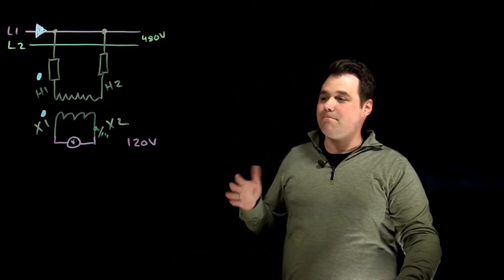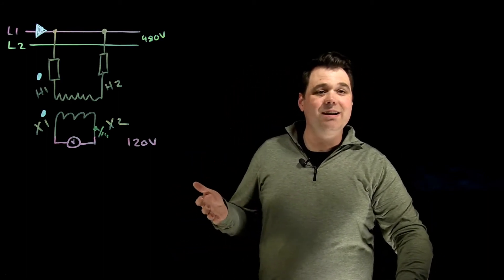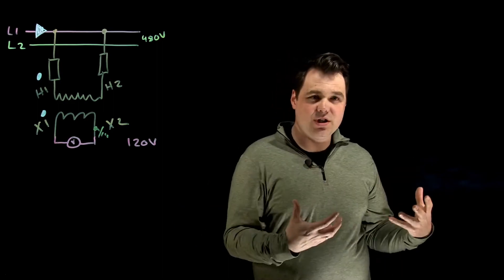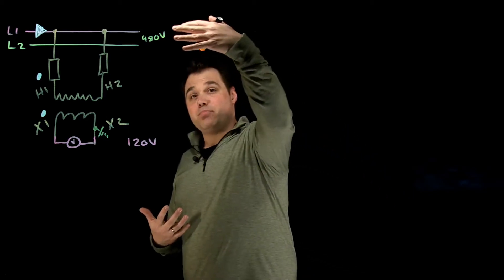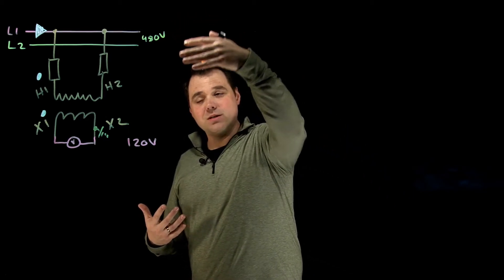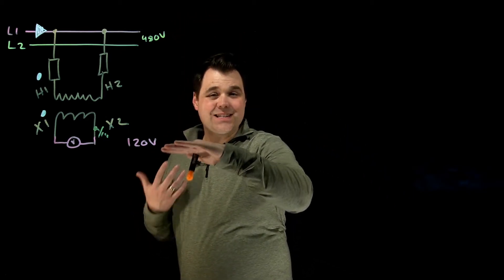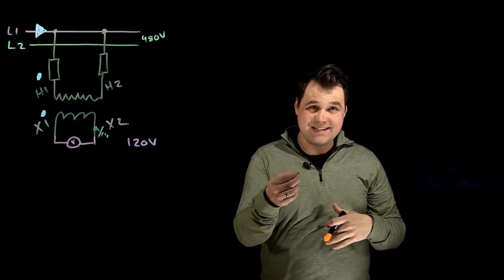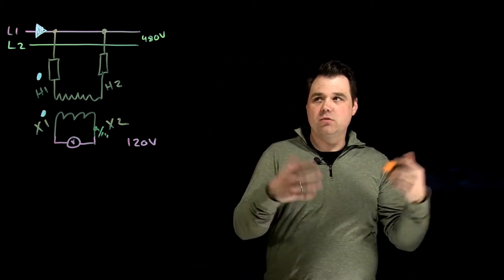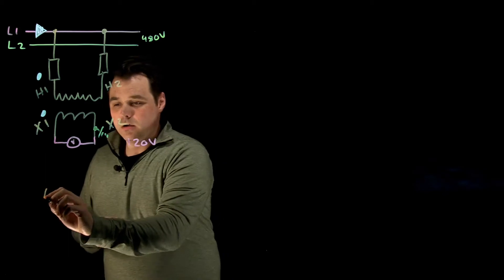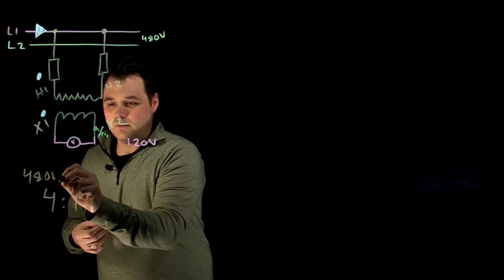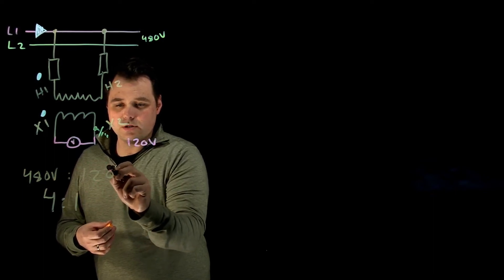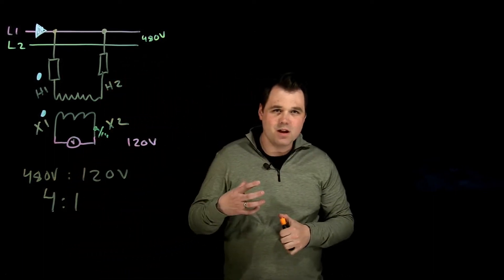Now when we look at these meters, the thing to keep in mind is they are all about a ratio, a transformer ratio. In this case here, my primary is 480 volts. My secondary is 120 volts, the rated voltage. So of course, this would be a four to one ratio. 480 volts to 120 volts.